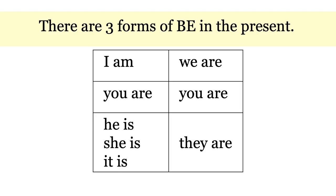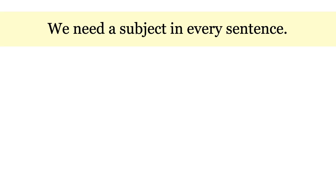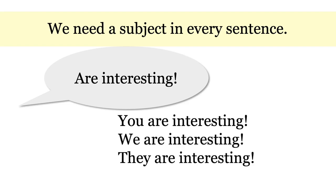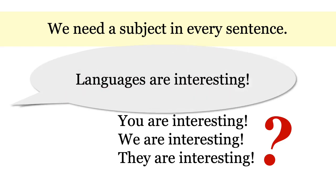There are three forms of BE in the present, but we have more than three pronouns in this chart. AM always goes with I and only I. But look at ARE — are goes with you, we, and they. And IS could be he is, she is, or it is. This is why we always need a subject in every sentence in English. In some languages you can say, are interesting, but in English we don't know what you mean. You are interesting. We are interesting. They are interesting. Since there are only three forms of BE, we need to include a subject in every sentence. Are interesting is incorrect. Languages are interesting.